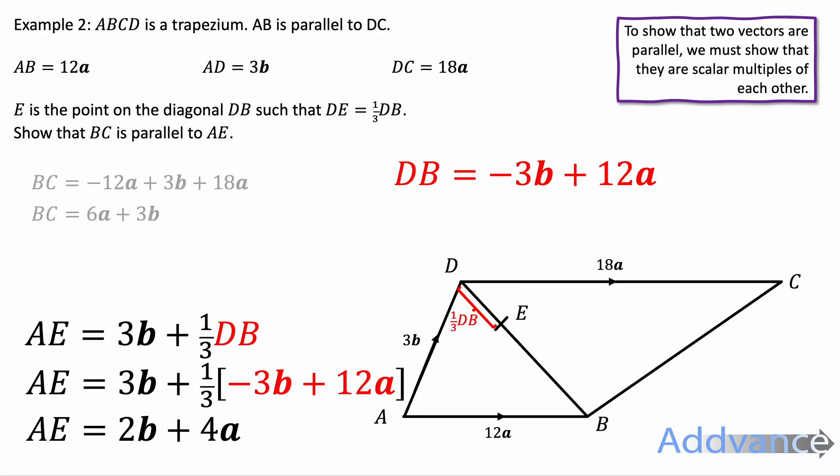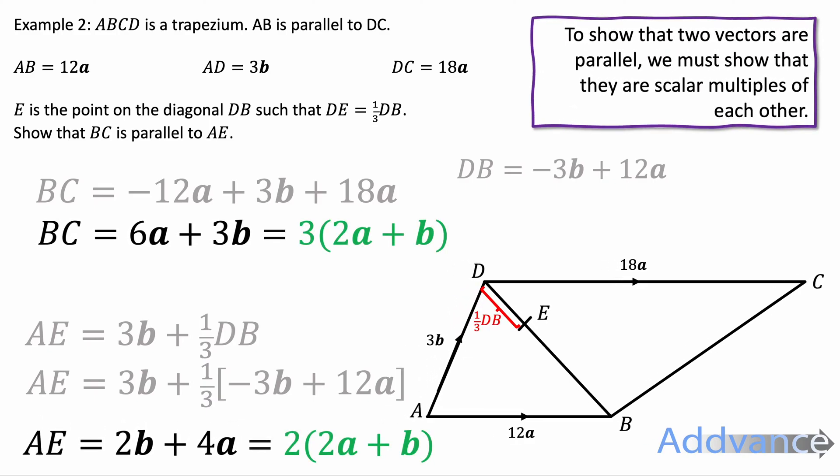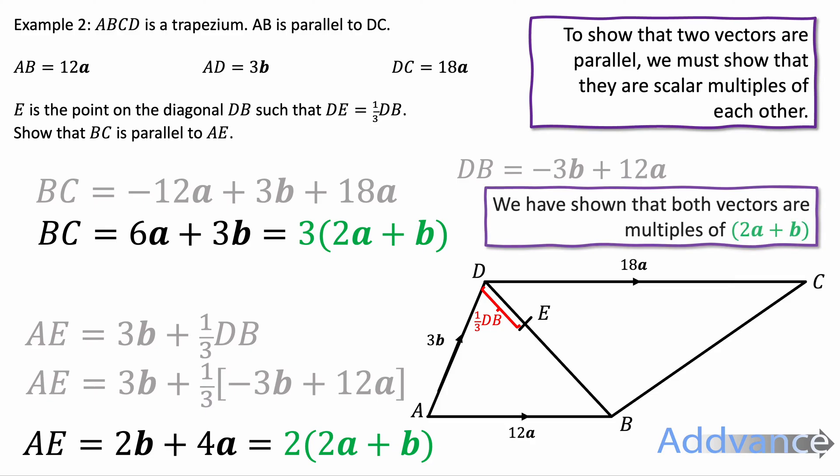Now, we can factorise both of these expressions here for AE and BC. We can take a 2 and a 3 out of these and we get that BC is 3 times 2a plus b and AE is 2 times 2a plus b. These are both scalar multiples of 2a plus b and therefore they are parallel. And that's the final answer we have done. We have shown what we wanted to show.